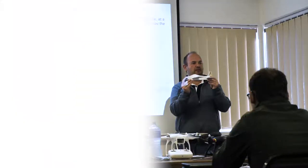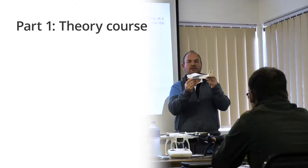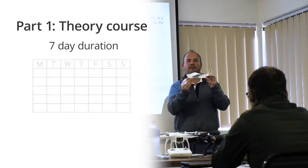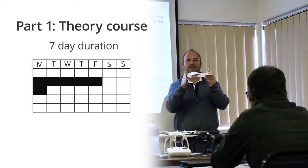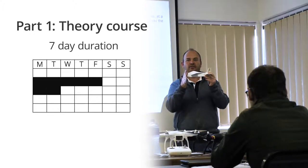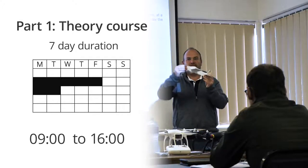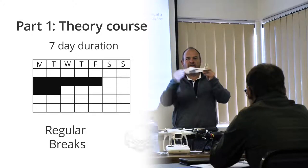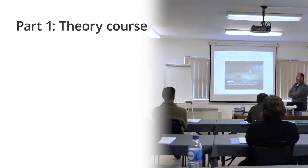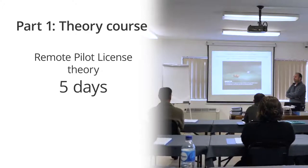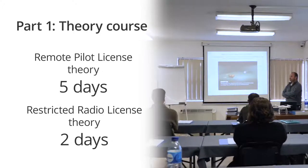The first part of the course focuses on the theoretical training. The theory course takes place over a period of seven days, which normally commences on a Monday and will continue until the following Tuesday. Classes commence at 0900 and will finish at approximately 1500 every day, with an hour break for lunch as well as two breaks for tea and coffee. Five days are allocated to RPL theory and two days for the restricted radio license theory.